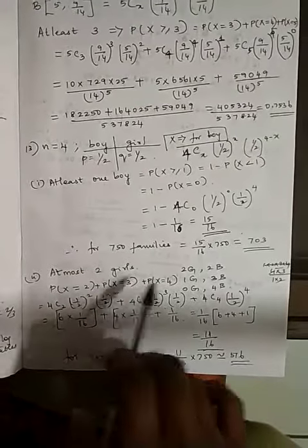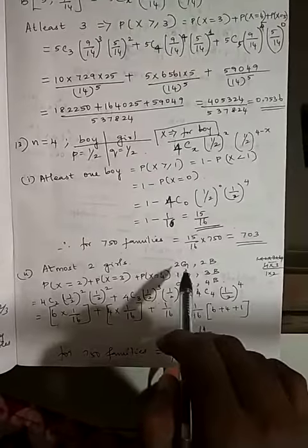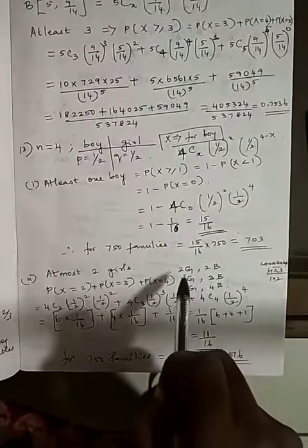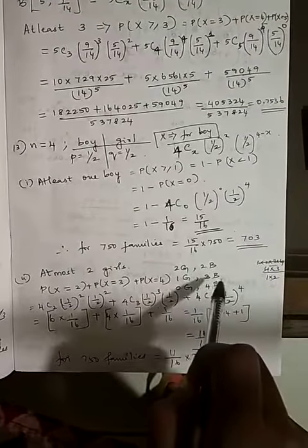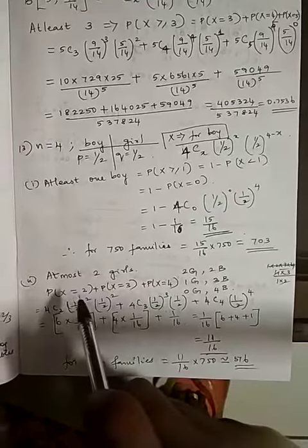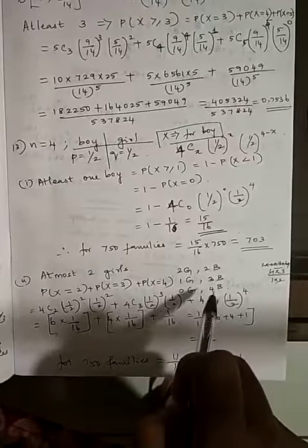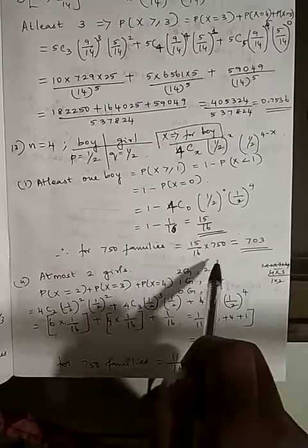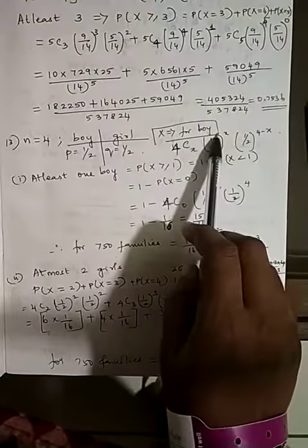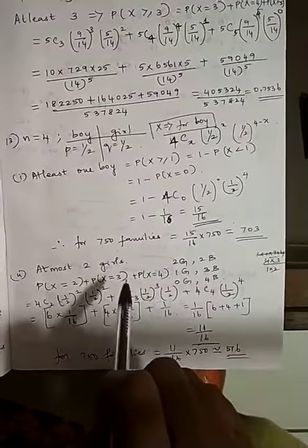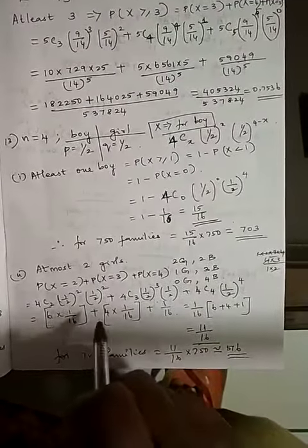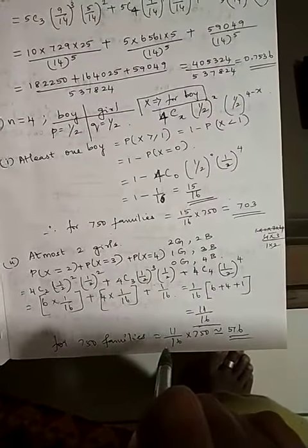For at most 2 girls: since X represents boys, the combinations are 2 boys + 2 girls, 3 boys + 1 girl, and 4 boys + 0 girls, corresponding to x = 2, 3, 4. Taking 1/16 as common and adding the coefficients gives 11/16. Multiplying by 750 families gives 516 families.